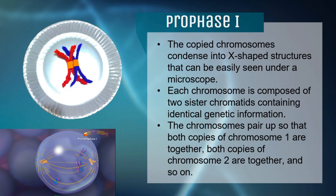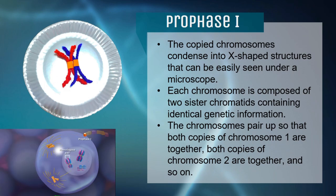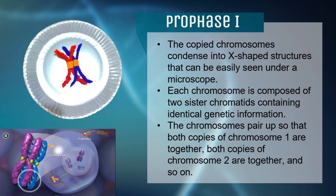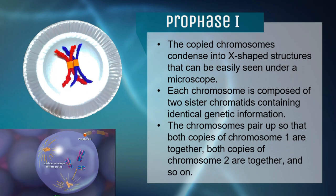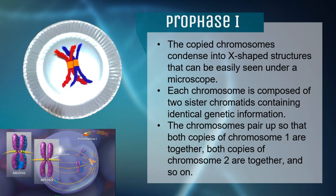The chromosomes condense into X-shaped structures which can be seen under a microscope. These chromosomes are composed of two sister chromatids containing identical genetic information. These chromosomes then pair up with other chromosomes. They are called homologous pairs since they are chromosomes of approximately the same size and they contain the same type of genes in the same location.